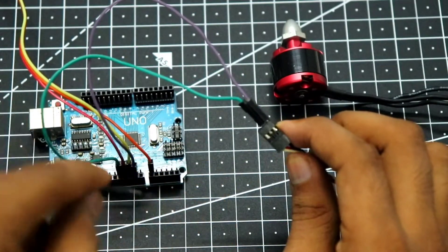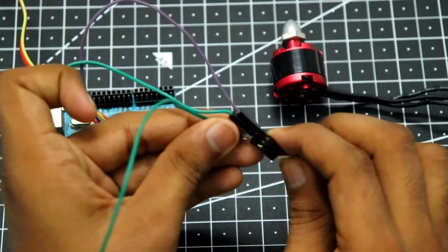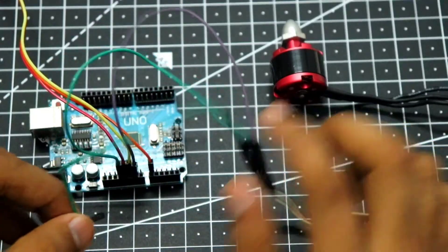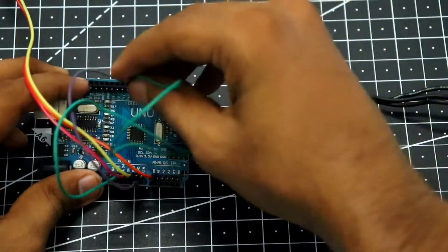And then the white wire, the signal wire, will go to pin 8 of the Arduino. And pin 8 is right over here.